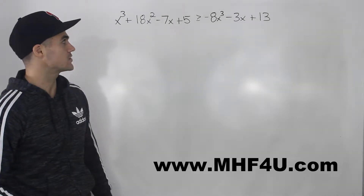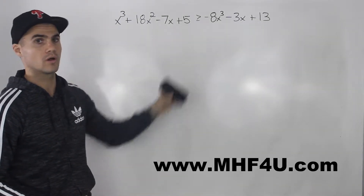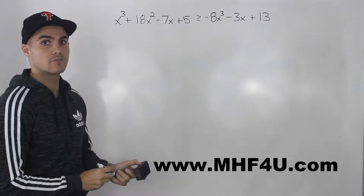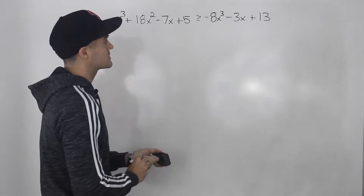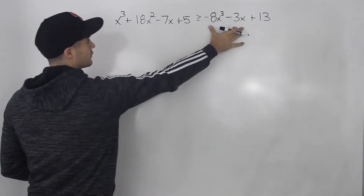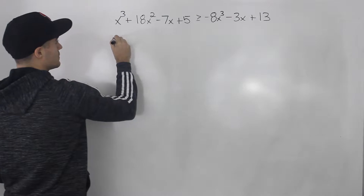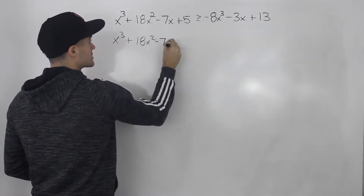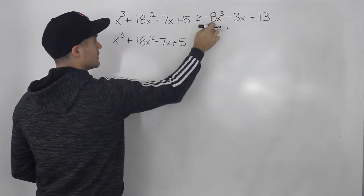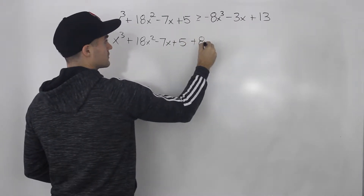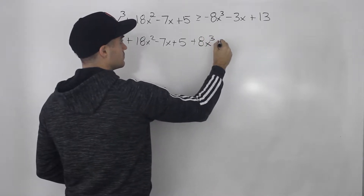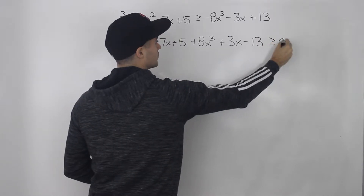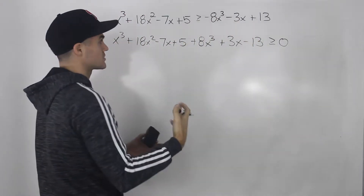Welcome back everybody. Moving on to the next question, we have a polynomial inequality here to deal with. With polynomial inequalities, the first step is to bring everything over to one side. So I'm going to take everything on the right side and bring it over to the left. So I got x cubed plus 18x squared minus 7x plus 5, this negative 8x cubed rather becomes positive, 8x cubed plus 3x minus 13, greater than or equal to zero. Brought everything over, signs just switched.